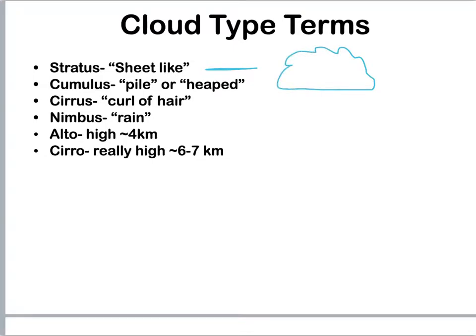Cirrus means a curl of hair, so they're going to be up high in the atmosphere and they're going to be really wispy. You might hear the term cirrus describing wispy hair. Nimbus — these are clouds that rain, so it could be cumulus clouds that are raining or stratus clouds that are raining.